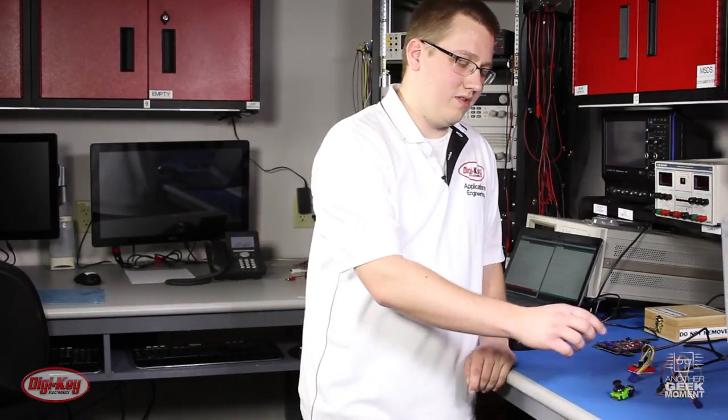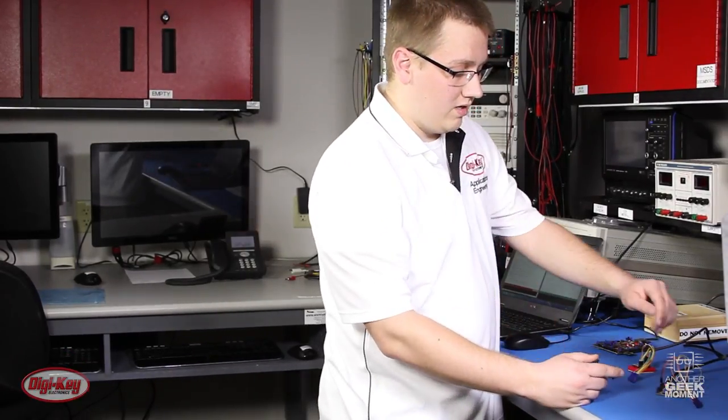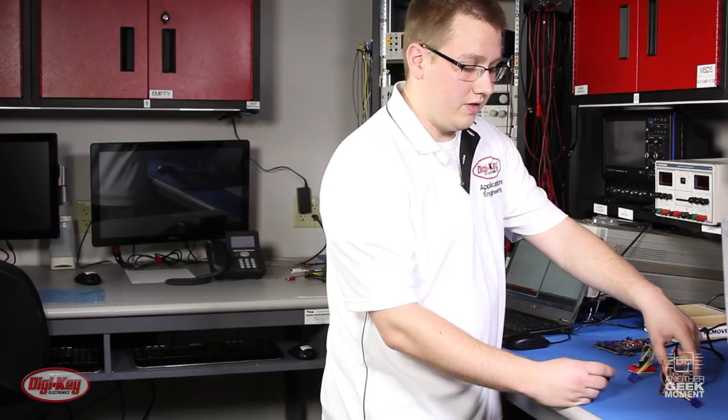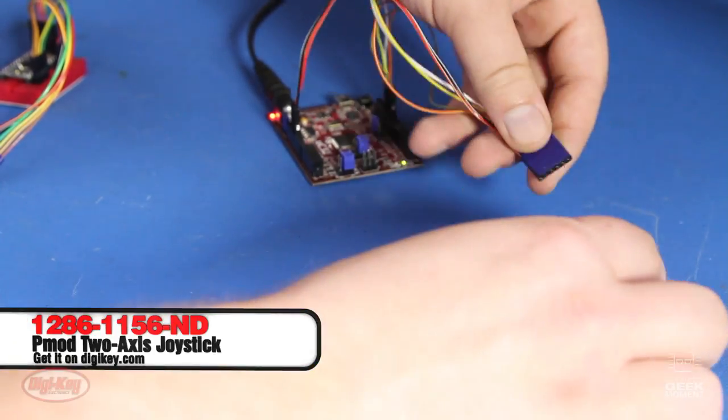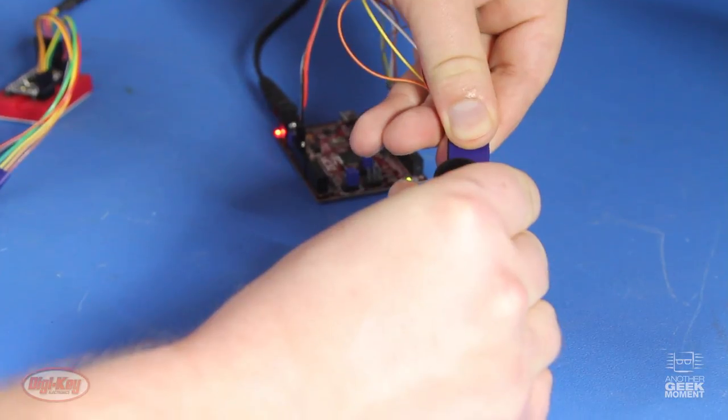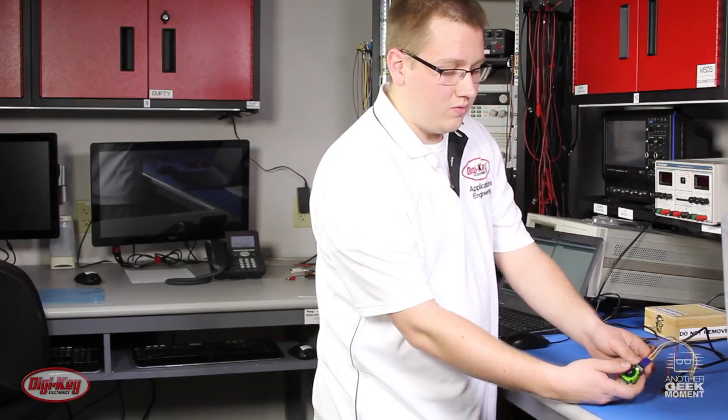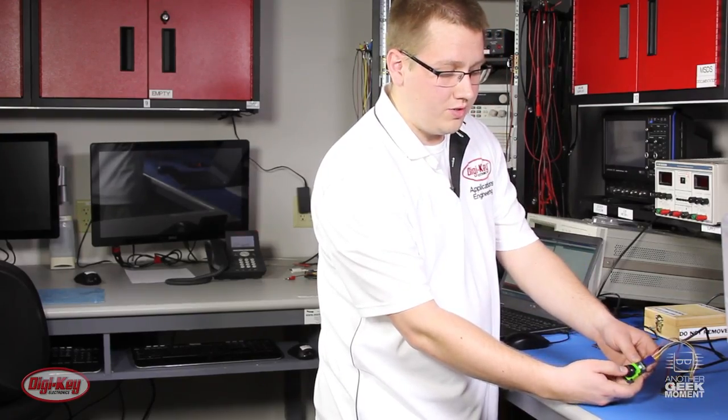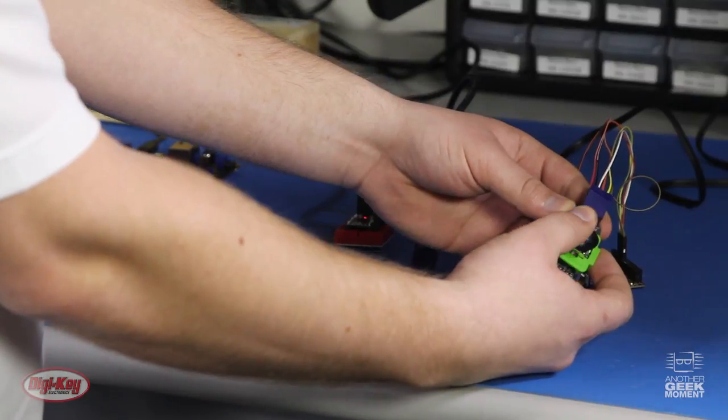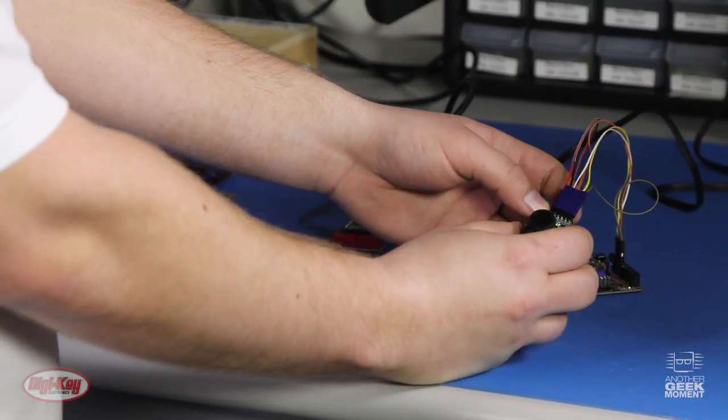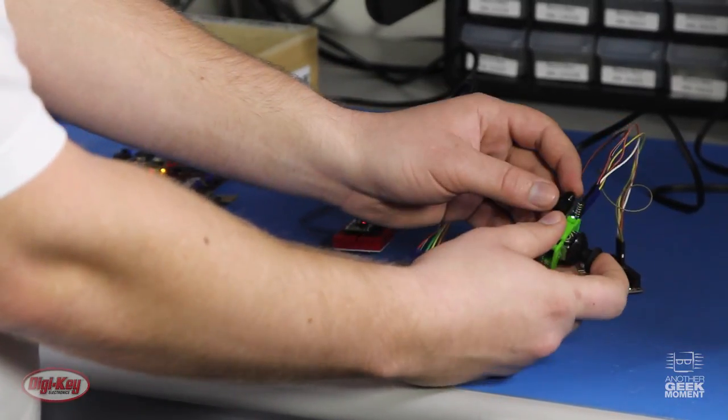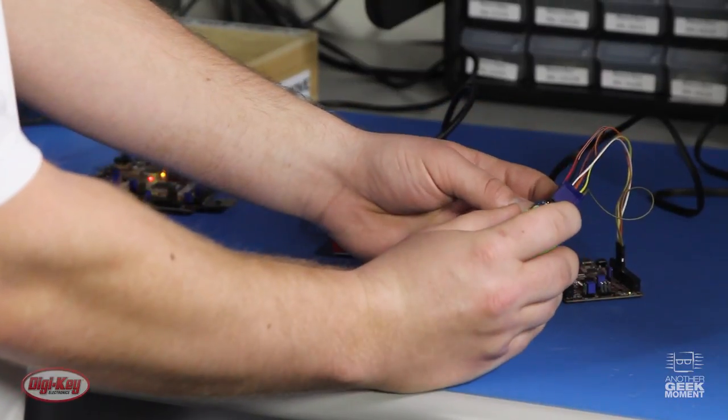Next we're going to be talking about the P-Mod joystick module. Here I have the UC32 development board from Digilent with the example code already uploaded to it. This example code simply changes the color of this top RGB LED based on the location of the joystick. You can also increase the intensity of the LED by pushing either the bottom button or the center joystick.